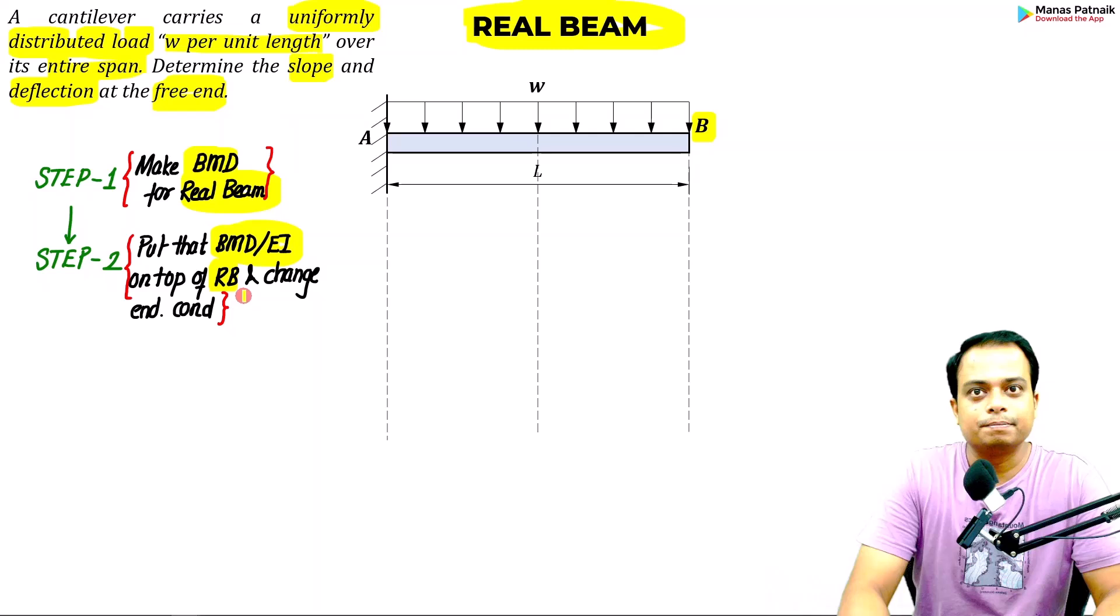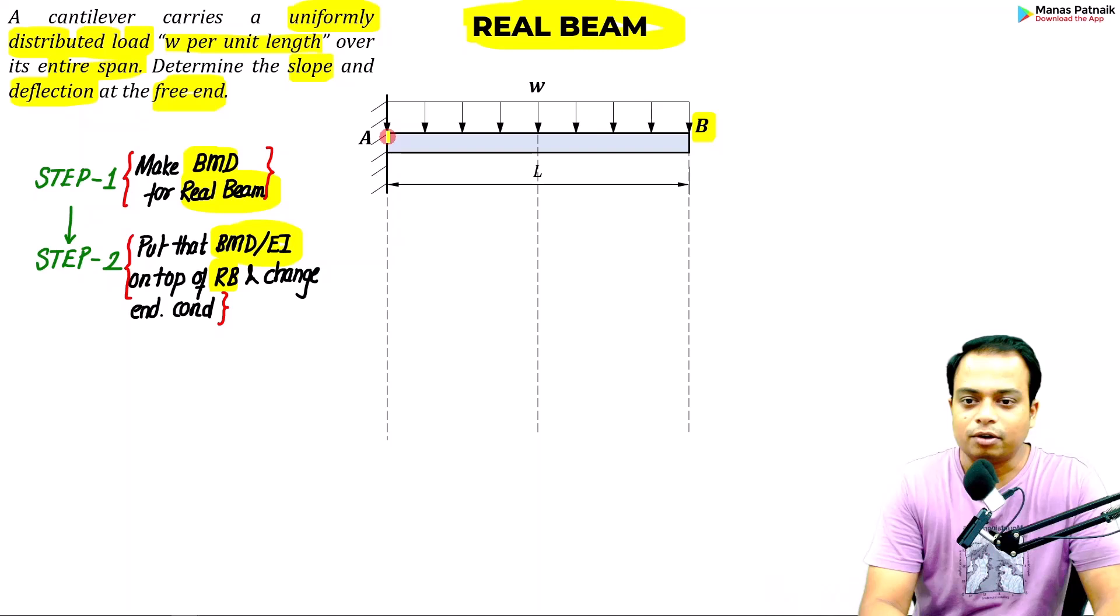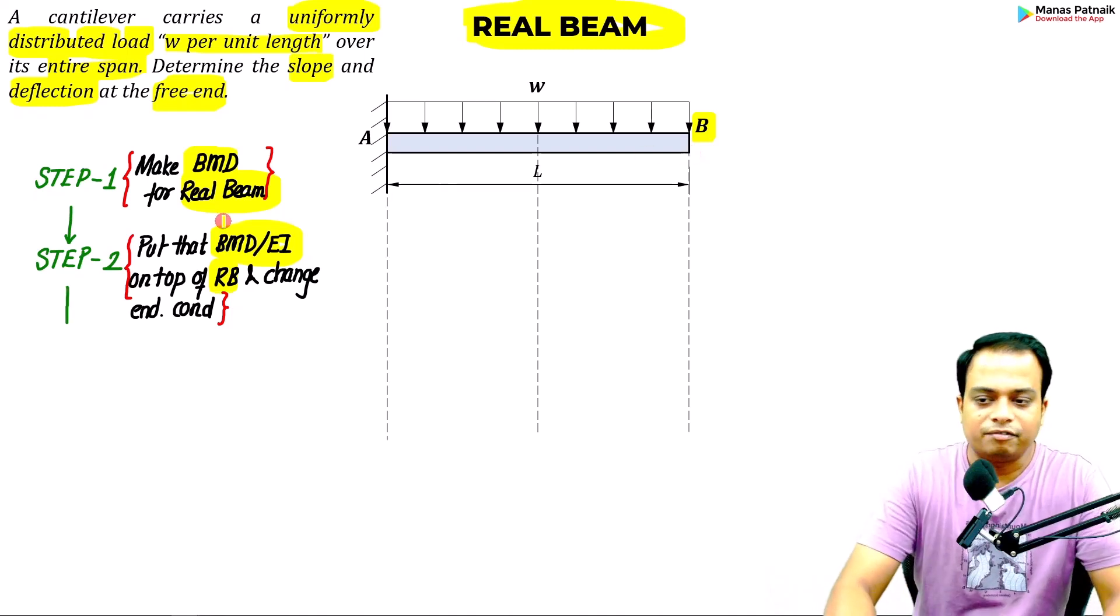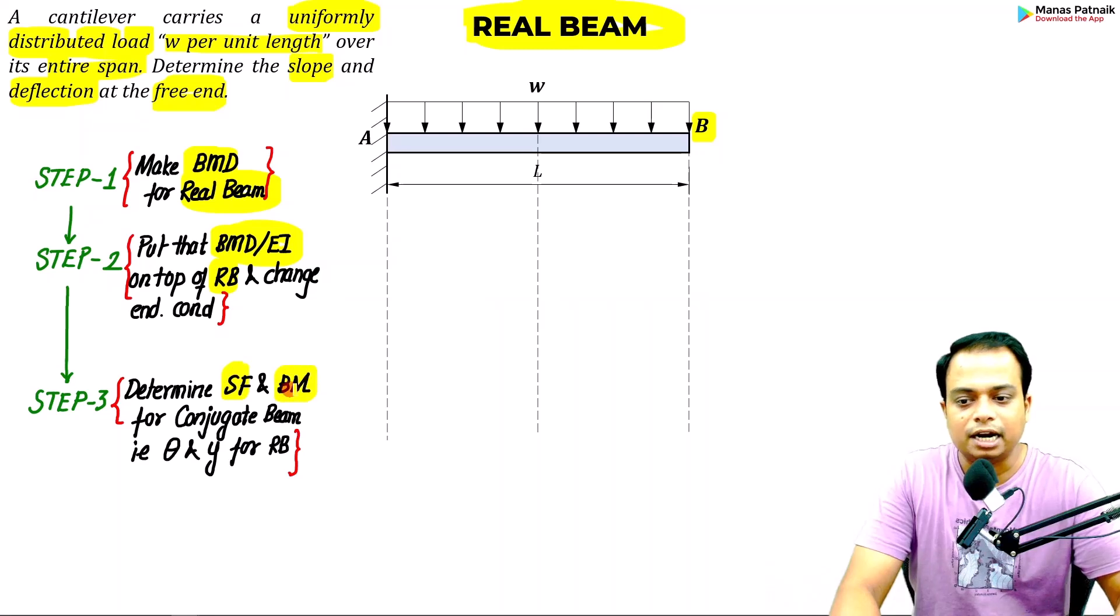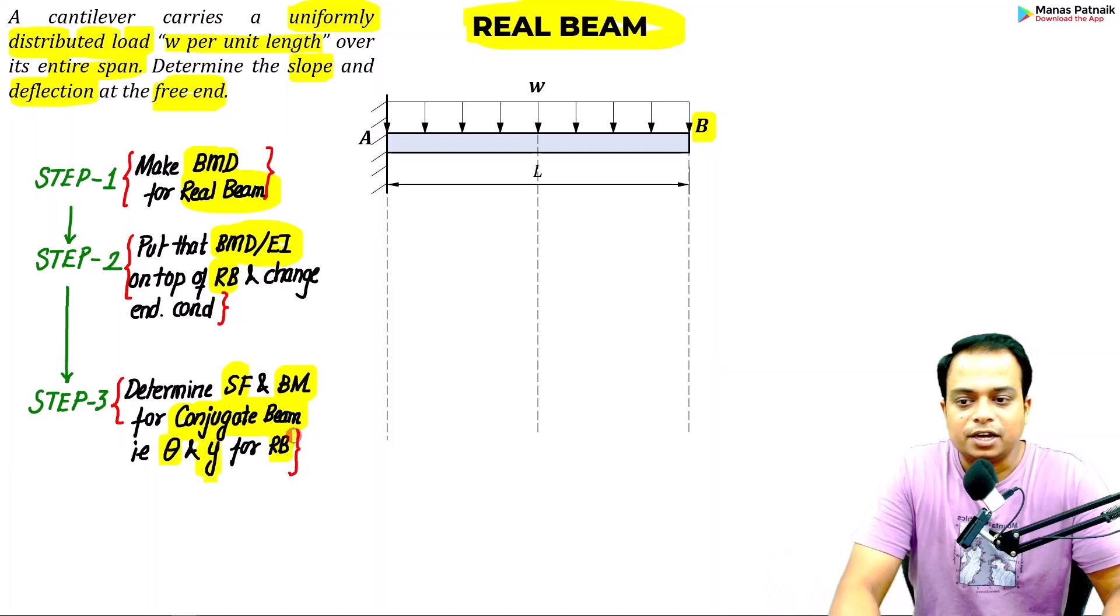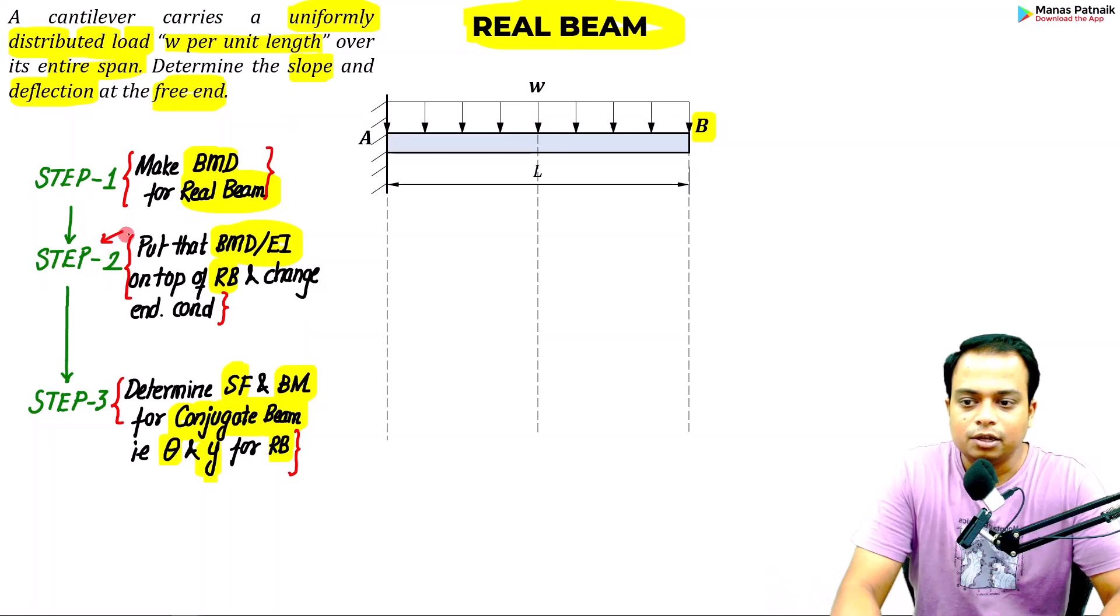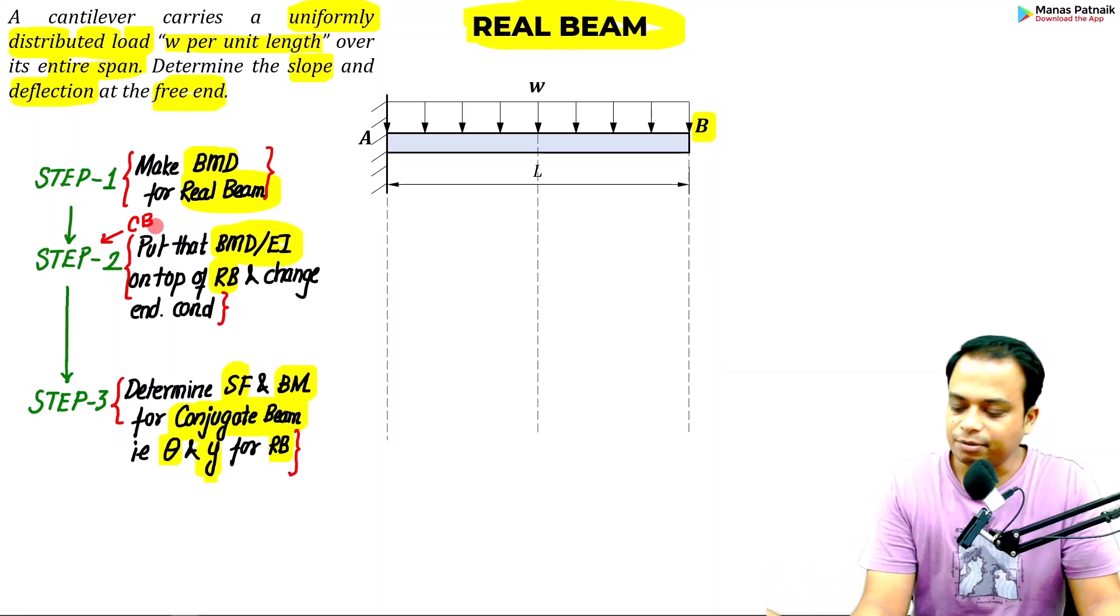Then you change the boundary conditions, reversing them. The fixed end of the real beam will become the free end, and the free end will become the fixed end. Then finally in step number three, you just need to calculate the shear force and bending moment diagram for the conjugate beam, which indirectly gives you the value of slope and deflection for the real beam. Step number two is where you prepare your conjugate beam by changing the end conditions and putting the M over EI diagram onto the beam itself.